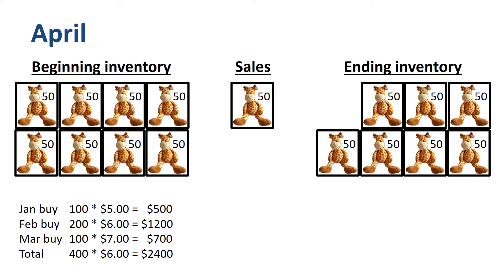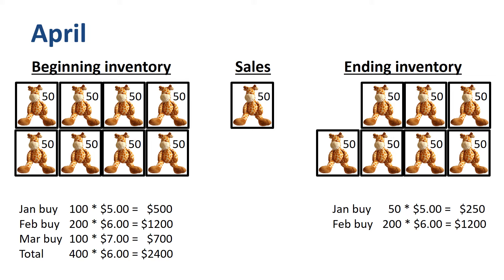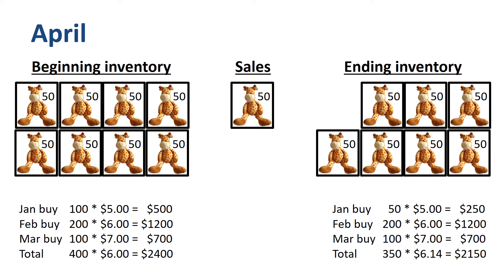With FIFO, we assume that the oldest inventory gets sold first, so we assume that the box sold originated from the January buy. What remains in inventory at the end of April is 50 units from the January buy, the full 200 units from the February buy, and the full 100 units from the March buy. In total, 350 units with a total purchase price of $2,150, so on average $6.14 per unit.